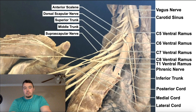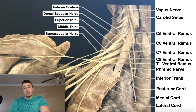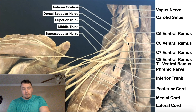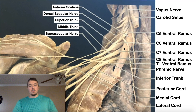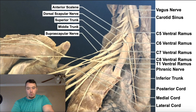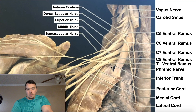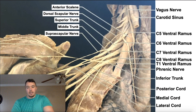This muscle — the anterior scalene — has an important purpose when we talk about the brachial plexus. If you look directly posterior to the anterior scalene, there's a space between it and the middle scalene. The space between these two scalene muscles is called the interscalene space, and all of these roots of the brachial plexus pretty much emerge through that space. You can actually see all five of these roots of the brachial plexus, and those are going to be C5 through T1.